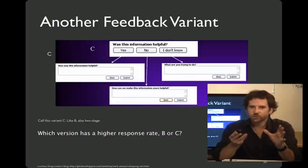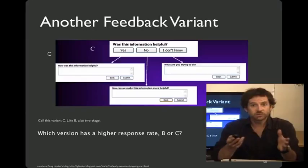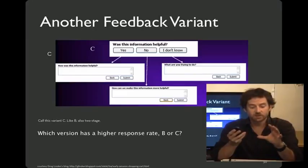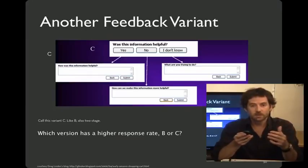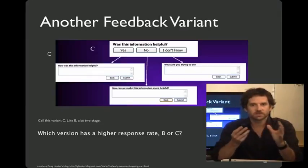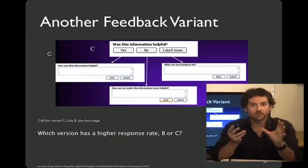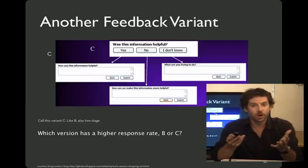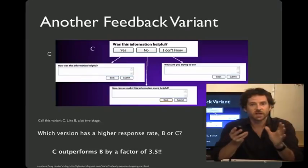But Microsoft's designers weren't done yet — they wondered whether they could increase things even more. So here's version C: as opposed to having five stars, we have three buttons — yes, no, and I don't know. Then we have the same two-stage feedback strategy as before, except the prompt in this case is customized to the particular button that you click. So we have simplified the number of options for the feedback and customized the prompt. Making these two small changes increases the rate of feedback by three and a half fold.